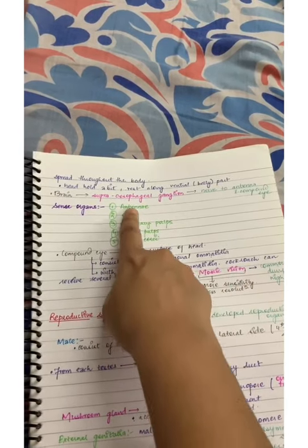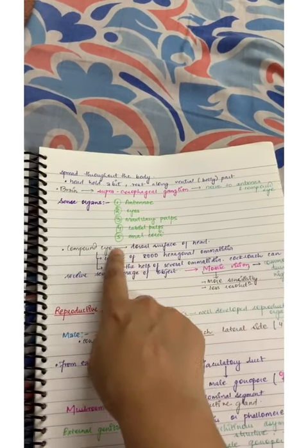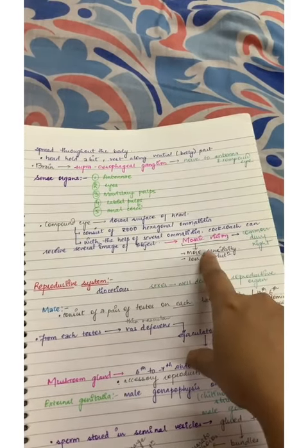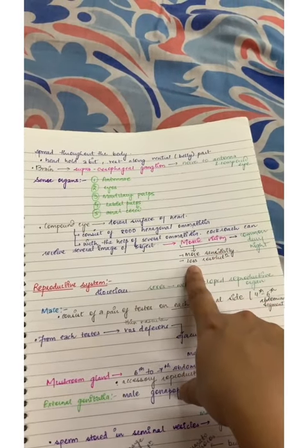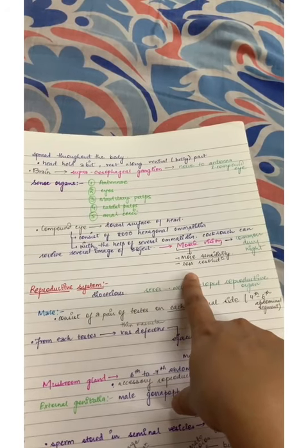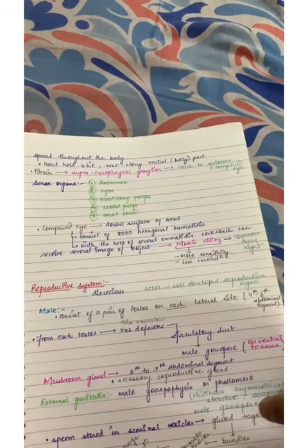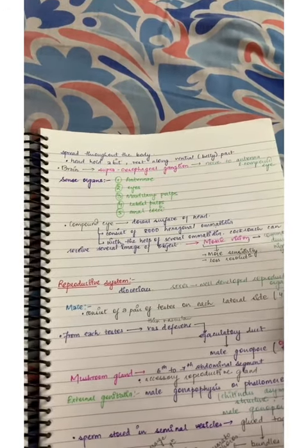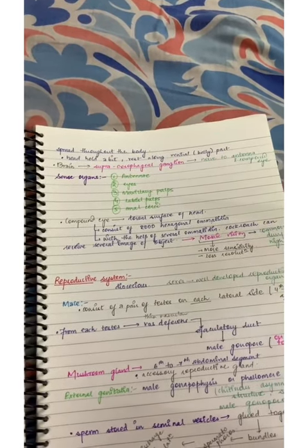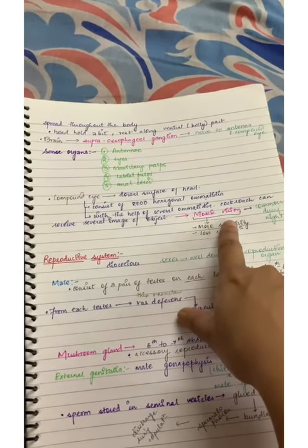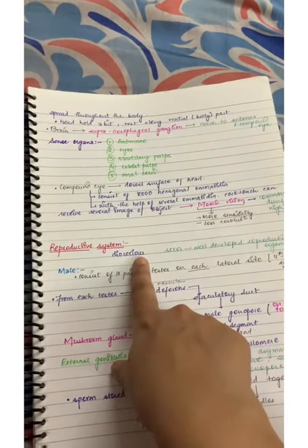And yes, compound eyes. Remember the mosaic vision - more sensitivity and less resolution. What happens in this? Cockroach shows everything like when we are looking at some bag, it will show everything in pieces. That means mosaic vision. In the reproductive system, it is dioecious, sexes well separated.